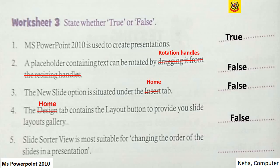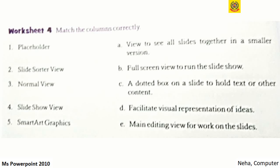Now match the columns correctly. First, placeholder - it is the dotted box on a slide to hold text or other content. Second, slide sorter view - it is the view to see all the slides together in a smaller version. Third, normal view - it is the main editing view for work on the slides. Fourth, slideshow view - it is the full screen view to run the slideshow.